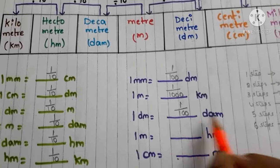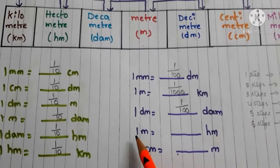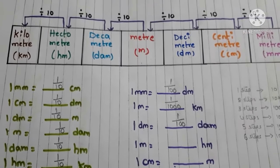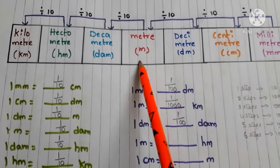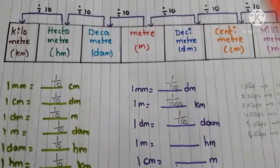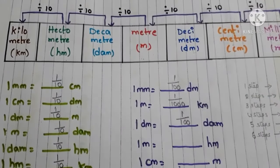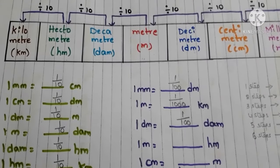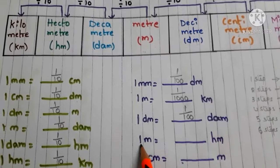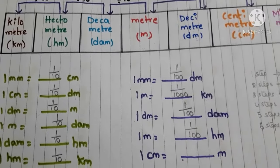Next: 1 meter equals how many hectometers? Find meter in the table, then find hectometer. Count the steps: one, two — two steps. So we divide by 100. Therefore, 1 meter equals 1/100 hectometers.